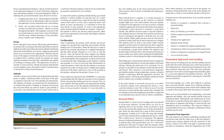Attitude is always critical when close to the ground, and when power is added, a deliberate effort is required to keep the nose from pitching up prematurely. The airplane executing a go-around must be maintained in an attitude that permits a buildup of airspeed well beyond the stall point before any effort is made to gain altitude or to execute a turn. Raising the nose too early could result in a stall from which the airplane could not be recovered if the go-around is performed at a low altitude. A pilot executing a go-around must accept the fact that an airplane cannot climb until it can fly, and it cannot fly below stall speed. As soon as the appropriate climb airspeed and pitch attitude are attained, rough trim the airplane to relieve any adverse control pressures.